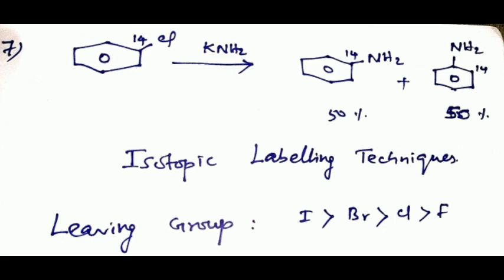In the benzyne mechanism, the leaving group order is the opposite compared to SNAr mechanism: in SNAr, iodine is greater than bromine, which is greater than Cl, and fluorine is least reactive. Thank you, friends.